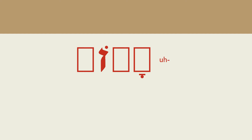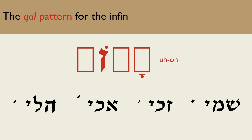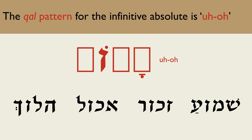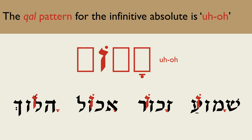You may have noticed that nearly all of the infinitives absolute we have looked at have had the same vowel pattern: o-o. It is worth knowing this pattern, as it will help you to identify the kal infinitive absolute, which is the most common.